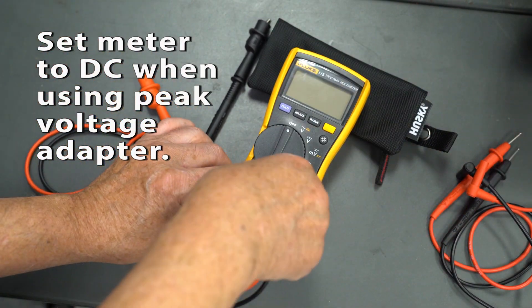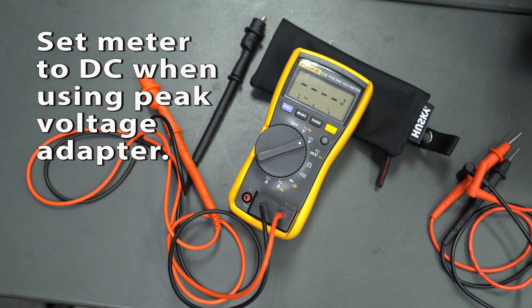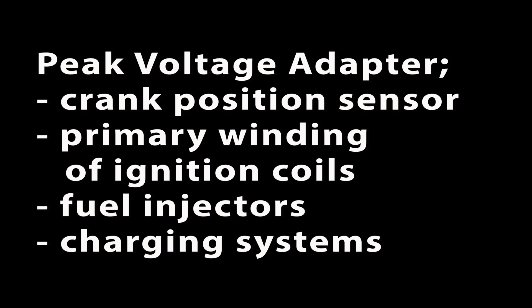Peak reading adapters for your voltmeter are pretty inexpensive and can be used to test not only the crankshaft position sensor, but the primary windings on ignition coils, the fuel injectors, and charging systems.